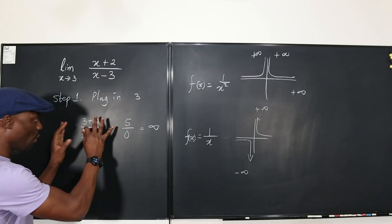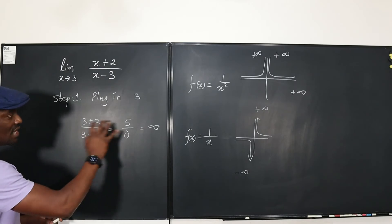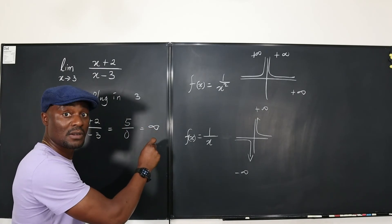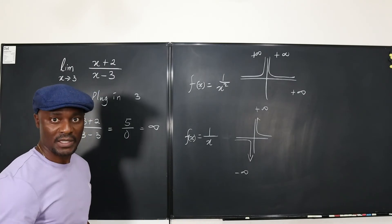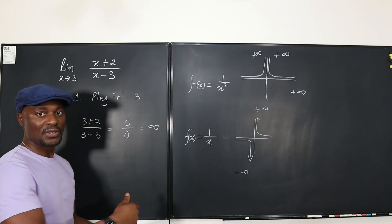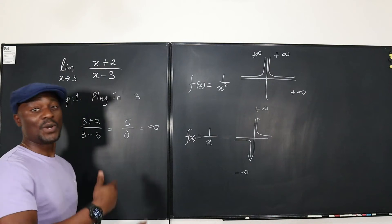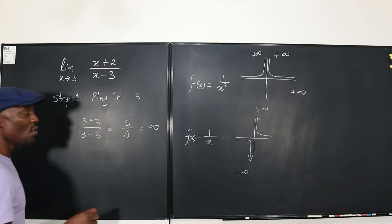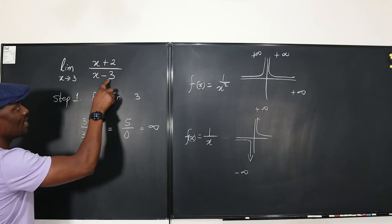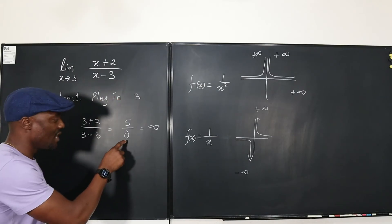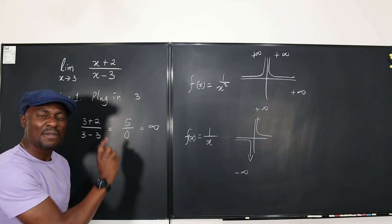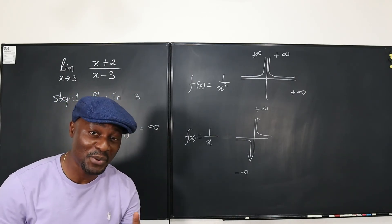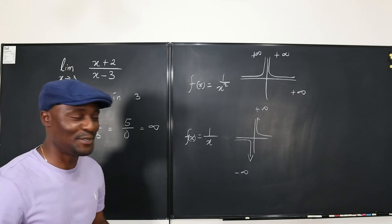Now let's go to this problem and see — we know we're dealing with infinity, we just want to conclude whether the answer is positive infinity, negative infinity, or does not exist. So what you do is go back to the denominator. We just want to see how the zero is going to behave: if the denominator were close to zero, will it be a positive number or a negative number? That's all you have to do.